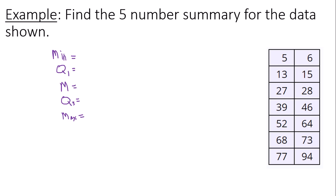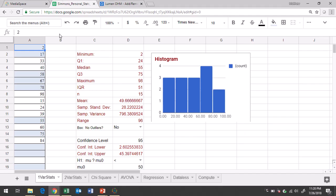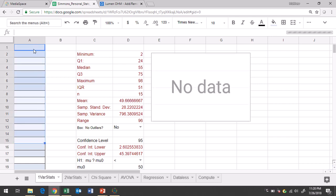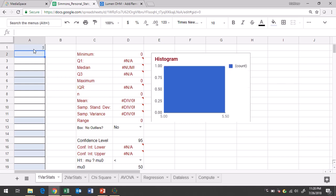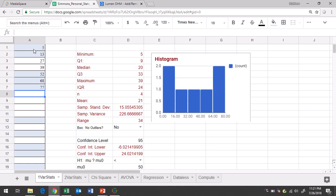So we'll use Google Sheets to find it. You will go to the one variable stats tab and you will first clear out column A. And then type in your data. You can type it in whatever order you want, it doesn't really matter. So just type in all of the data that they gave you in the question.